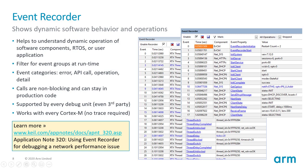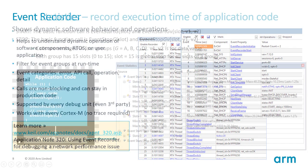We have several application notes about this. Application note 320, for example, uses the event recorder to analyze a network performance issue. Screen captures show the event recorder output for network components, making the network traffic clearly visible.